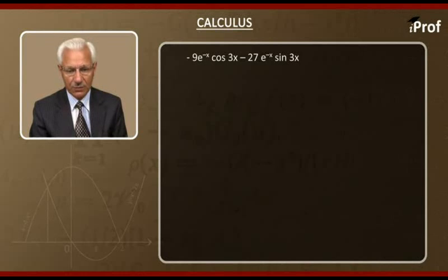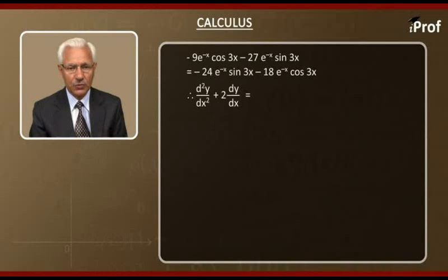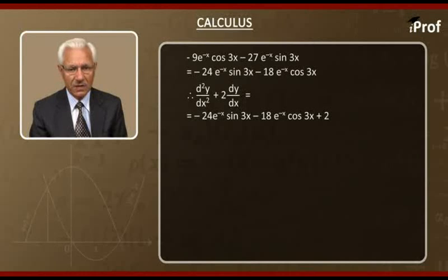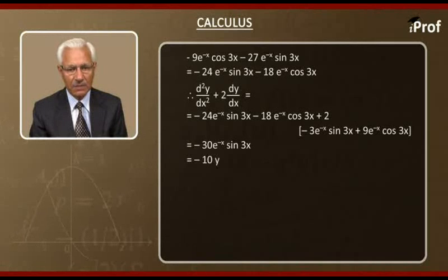Assembling similar terms, we get d²y/dx² = minus 24·e^(−x)·sin(3x) minus 18·e^(−x)·cos(3x). Now substituting to find d²y/dx² plus 2·dy/dx: minus 24·e^(−x)·sin(3x) minus 18·e^(−x)·cos(3x) plus 2 times (minus 3·e^(−x)·sin(3x) plus 9·e^(−x)·cos(3x)), giving minus 30·e^(−x)·cos(3x), that is minus 10y. This shows option c.